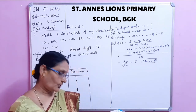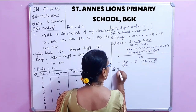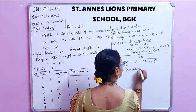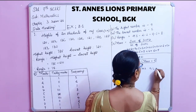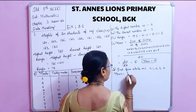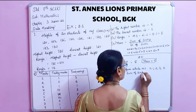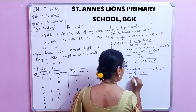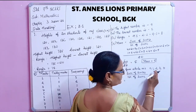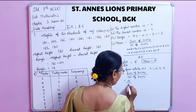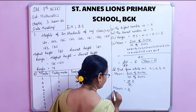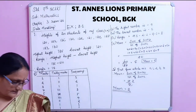Third question: find the mean of the first 5 whole numbers. The first 5 whole numbers are 0, 1, 2, 3, 4. Mean equals sum of scores divided by number of scores. Sum: 0 plus 1 plus 2 plus 3 plus 4 equals 10, divided by 5 equals 2. Mean equals 2.